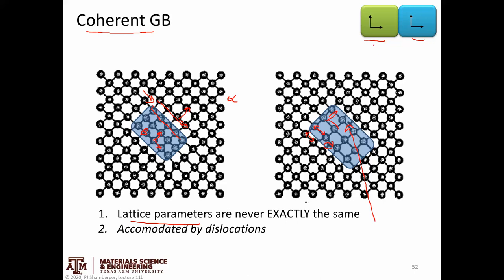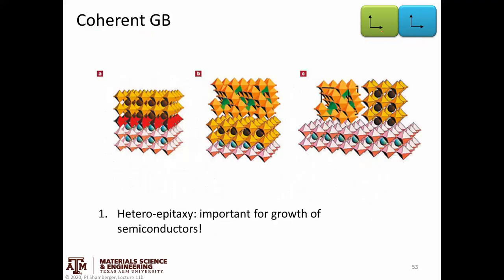The key takeaway is that coherent grain boundaries have a continuous lattice orientation across the boundary. As a special case, if the lattice direction is continuous and the lattice parameters are very close, we can essentially grow what looks like a single crystal of one type on top of a single crystal of another type. We can have alternating layers of maybe three different single crystals all grown on top of each other. When we have that kind of relationship, we call it epitaxy.